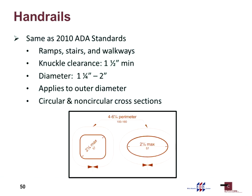The requirements for handrails are the same as the ADA standards. You have to put them on ramps, stairs, and walkways where required. Knuckle clearance is important so you can reach all the way around the handrail. There's a minimum and maximum diameter: for circular cross sections, 1.25 to 2 inches outer diameter; for non-circular cross sections, 4 to 6.25 inches measured around the cross section.